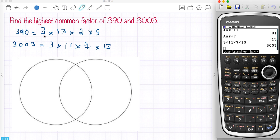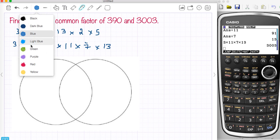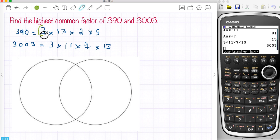Now what I'm going to do is in the middle of the Venn diagram I'm going to put any number that's common to both of these. So I can see that 3 is common to both of those, so let's stick 3 in the middle. And also 13 is common to both of those. So they're in the middle so they belong to both sets.